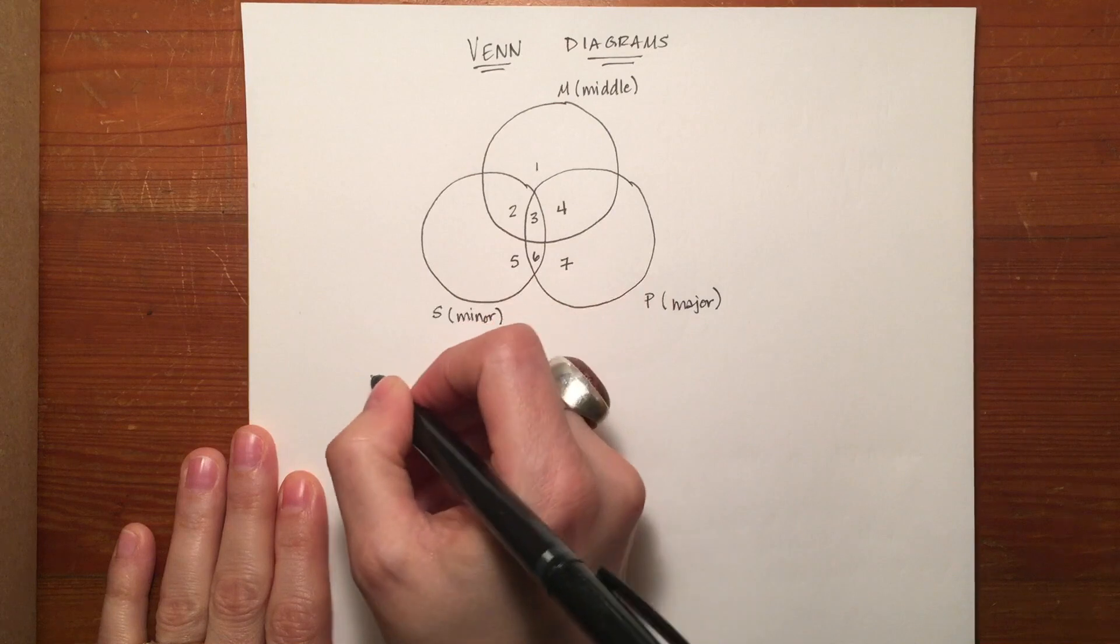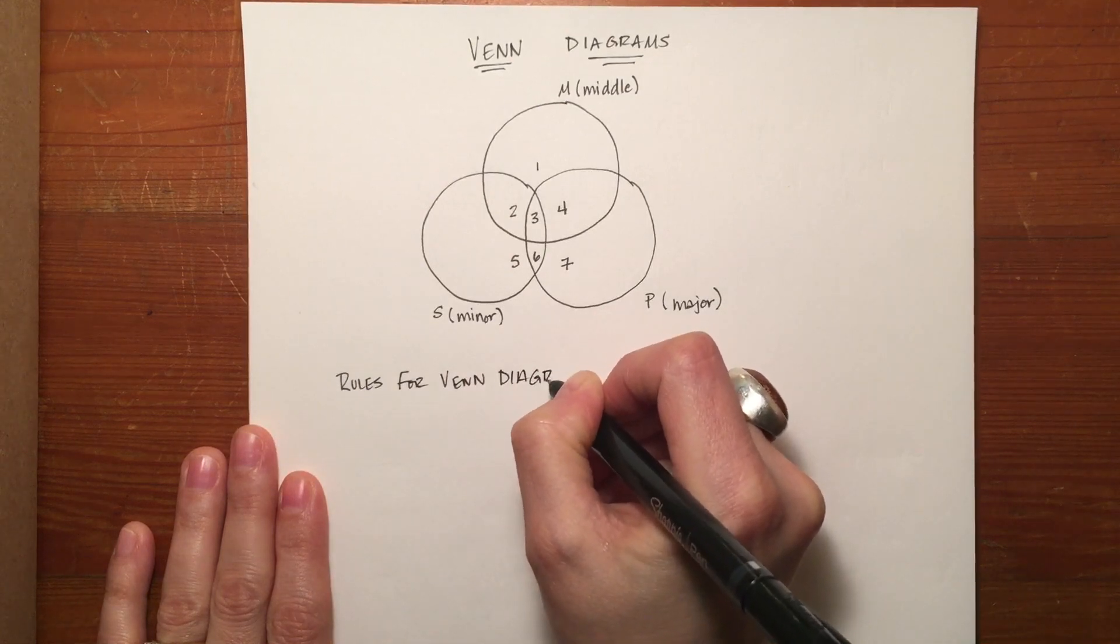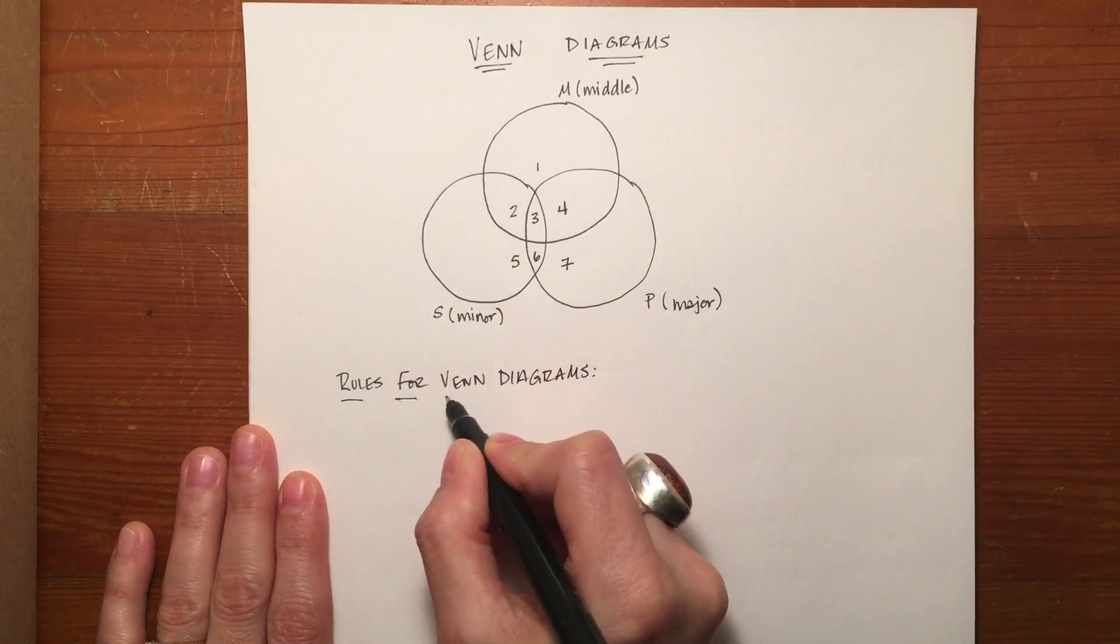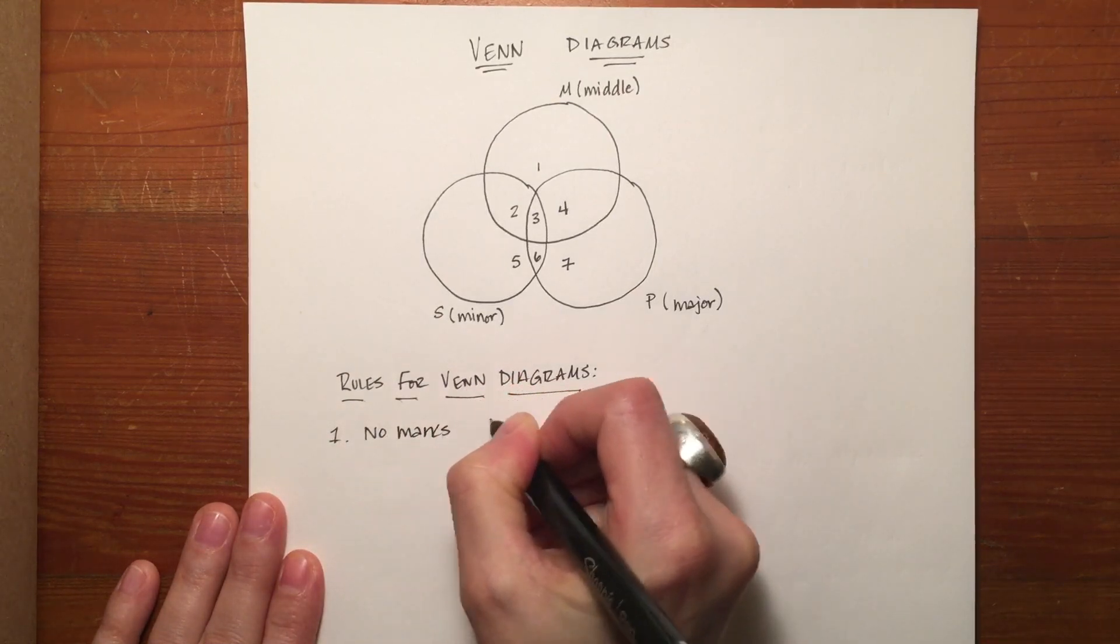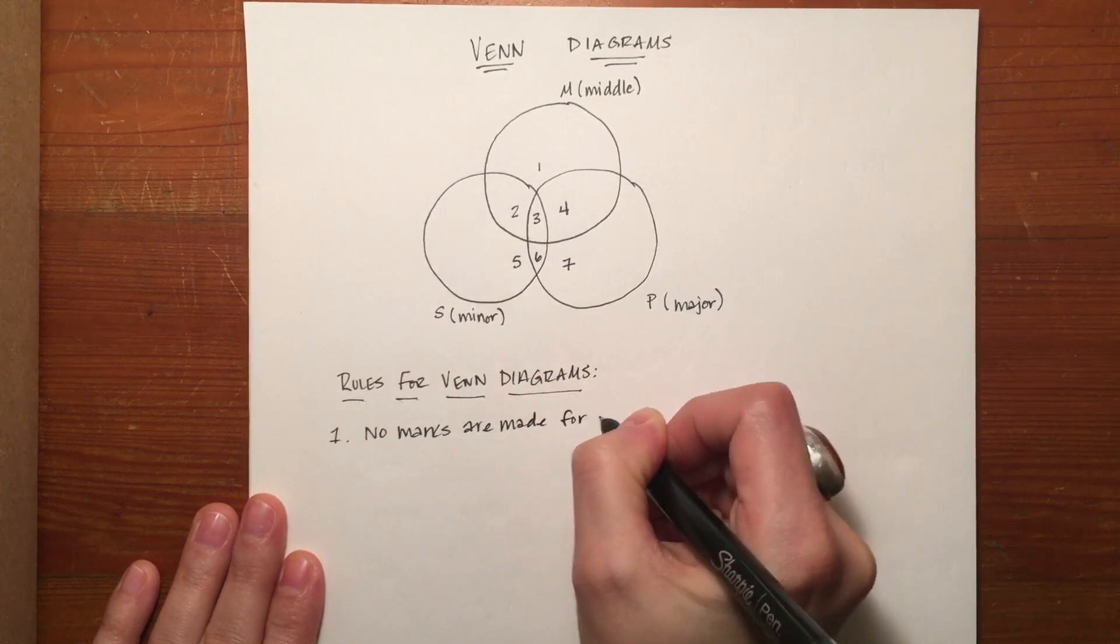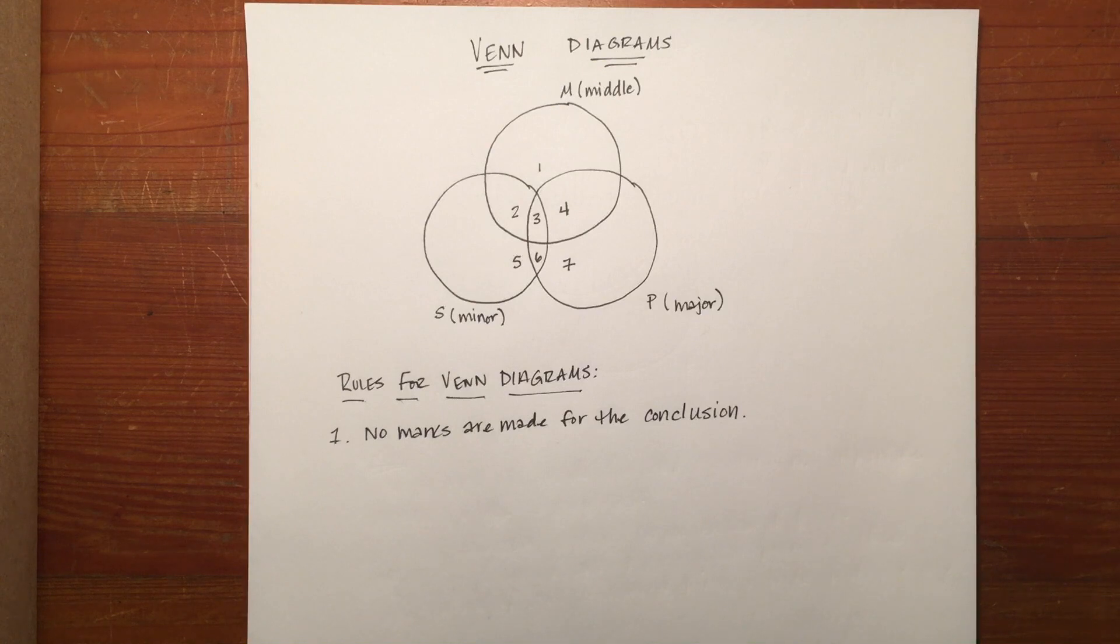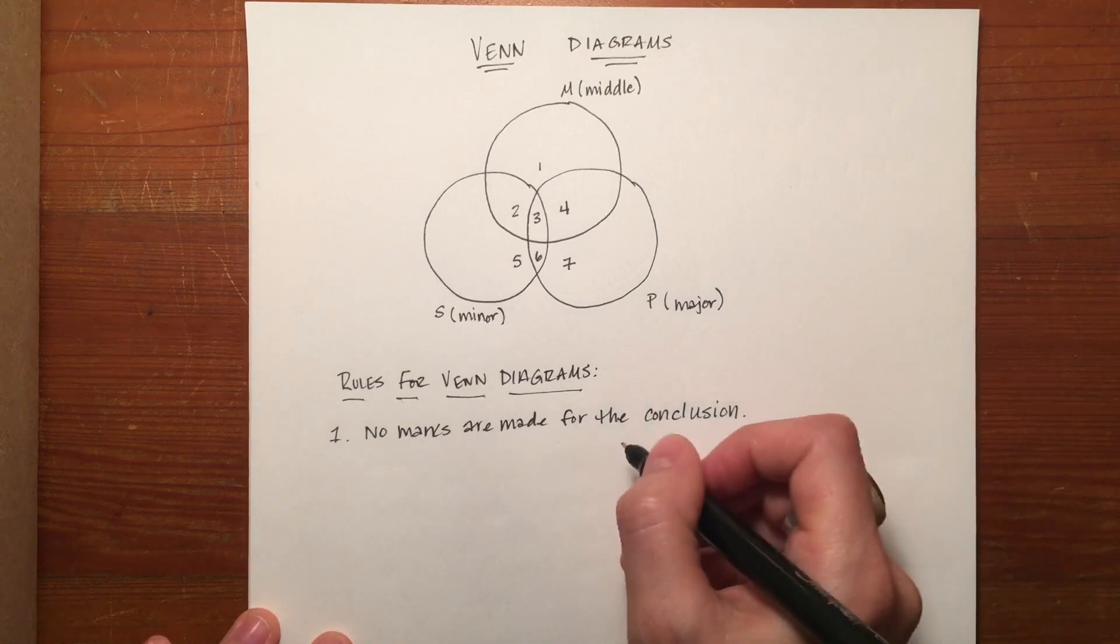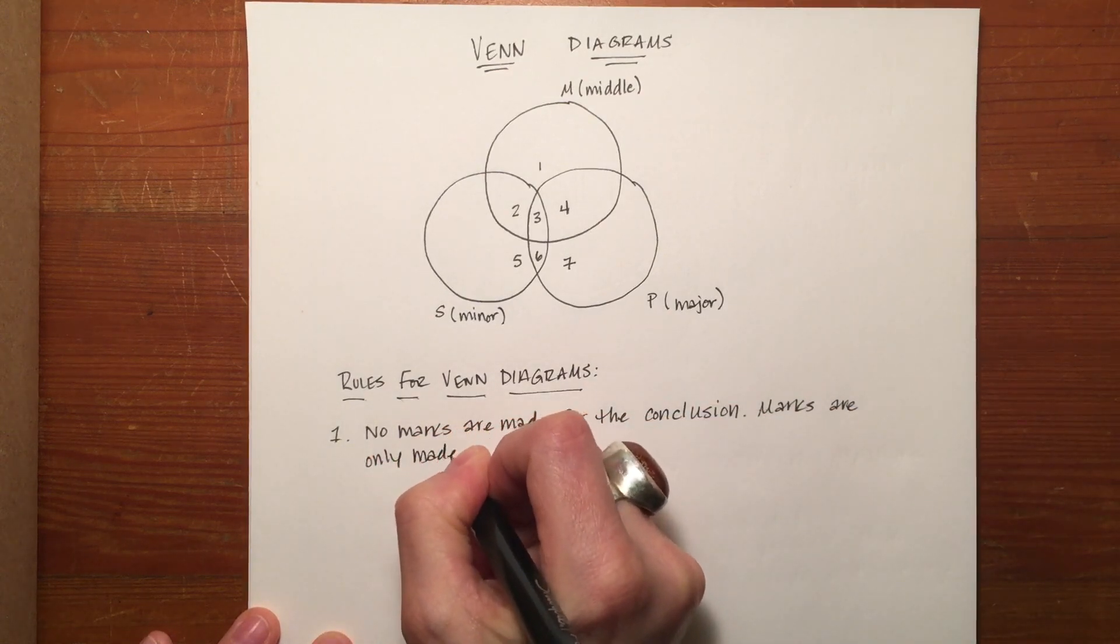There are a few rules that you should know for Venn diagrams. Rule number one: no marks are made for the conclusion. So just like when you were working with proofs, you're not going to actually use the conclusion as part of what you're working with. You are instead going to use it as a reference. Marks are only made for the premises.